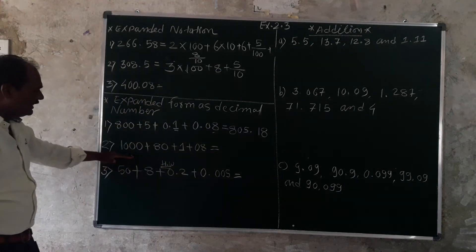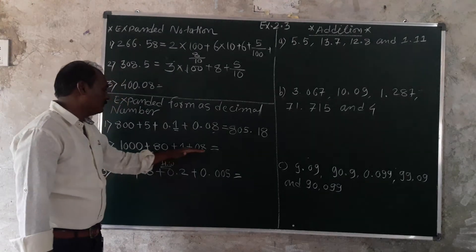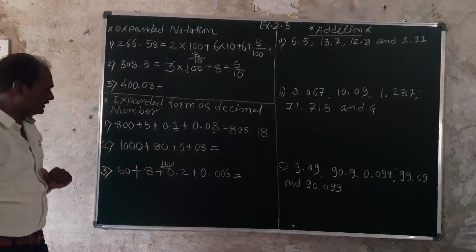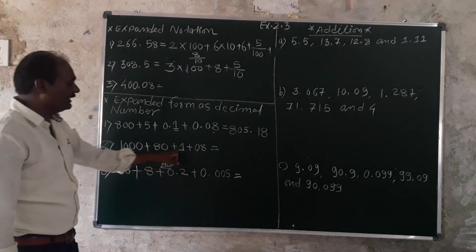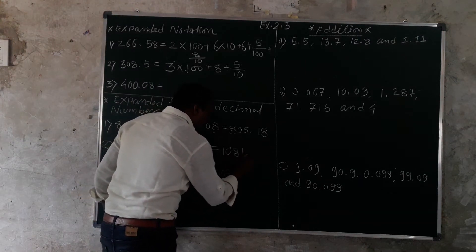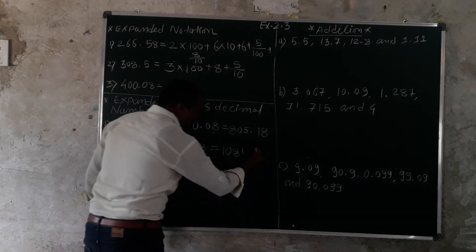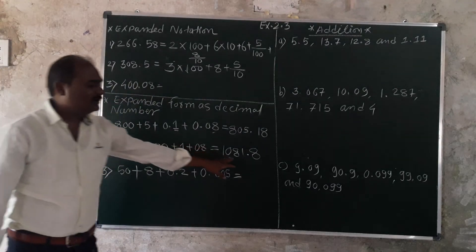This is 1000 plus 80 plus 1 plus 8 over 10. What is it? 1081 plus 0.8 equals 1081.8. This is the decimal form.